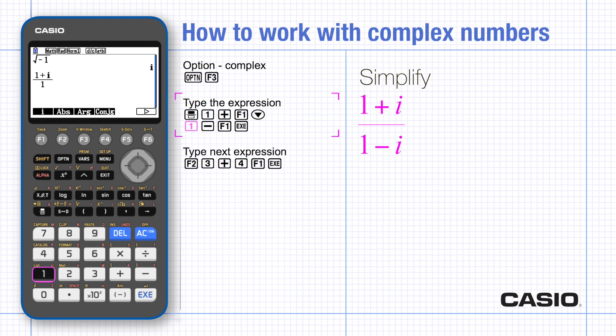Use the cursor down to get to the denominator and execute to simplify the expression. Use absolute value for the modulus and the more familiar notation appears on the screen. Type the number and execute.